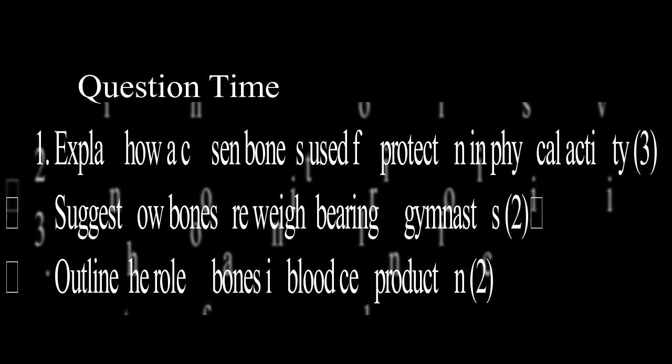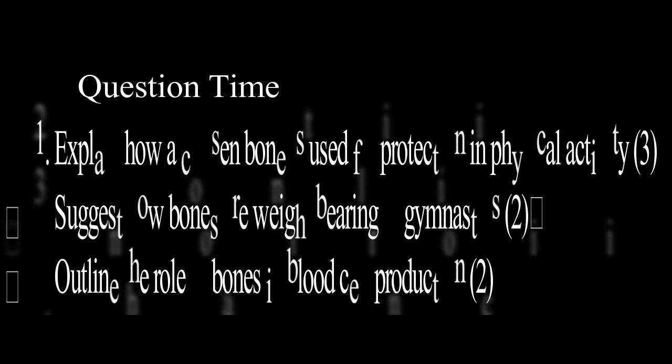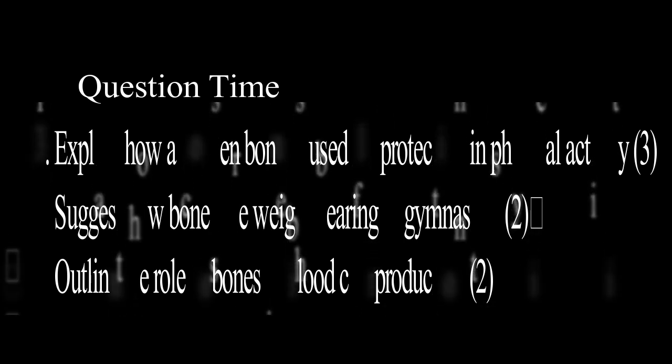Number three — outline the role of bones in blood cell production. Red blood cells carry oxygen to the muscles, and white blood cells help fight infection and keep the performer healthy. So we've got seven marks worth of questions there and hopefully you've done okay on those. As always, please like and subscribe to the channel, and comment below if there's anything you think we need to add. We will be back with our next one and continue to look at the skeletal system very soon. Thanks for listening.